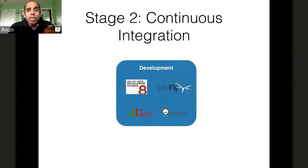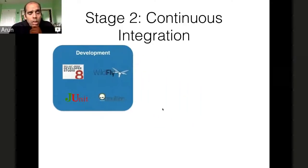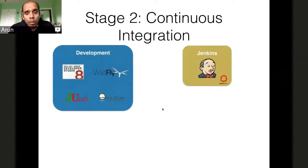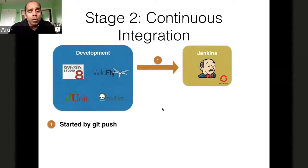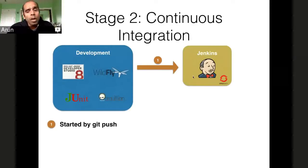The second stage is continuous integration. You've got your development environment set up. You can easily spin up a Jenkins instance on OpenShift, and every time you do a git push, you tell Jenkins to run those tests against your container automatically. So you do a git push, Jenkins is running on OpenShift, it checks out the whole workspace, builds it, and runs the tests against a Wildfly instance running on the same instance. That's the second step.